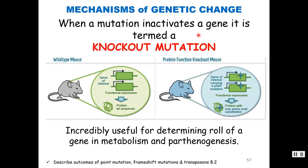In the previous video on quorum sensing, when working with Pseudomonas aeruginosa, researchers took out the quorum signal protein through a knockout mutation. With a knockout mutation, you have a gene of interest — in that case the quorum sensing protein — and you insert a stop codon to truncate and knock out that gene. This technique is incredibly useful for determining the roles of genes in metabolism and pathogenesis.